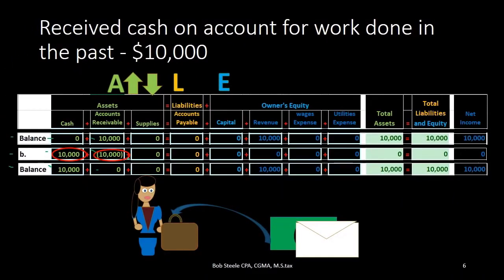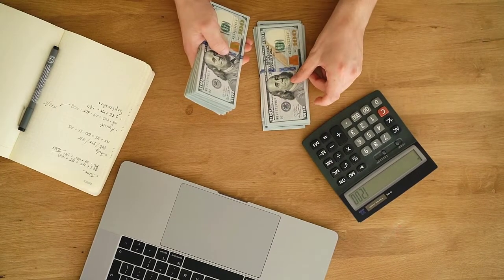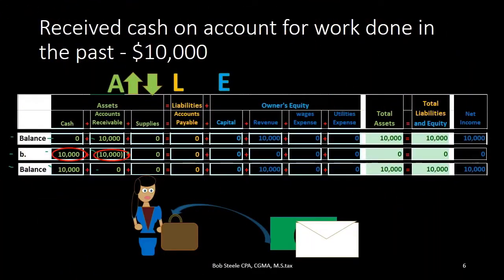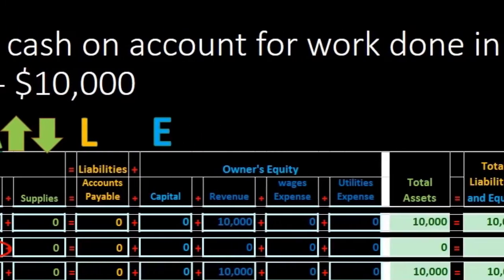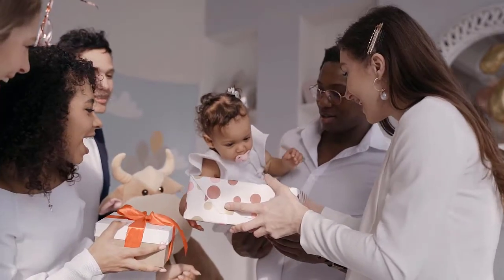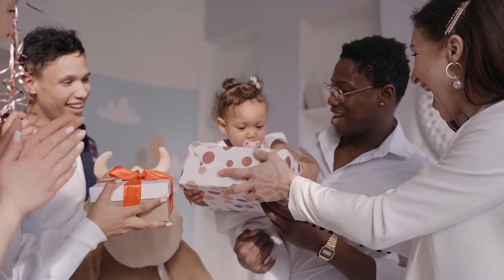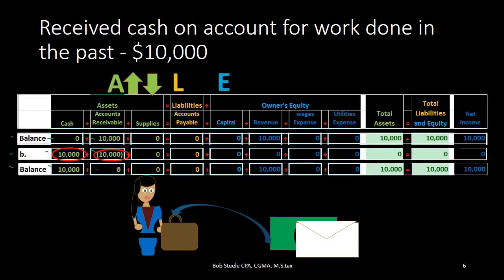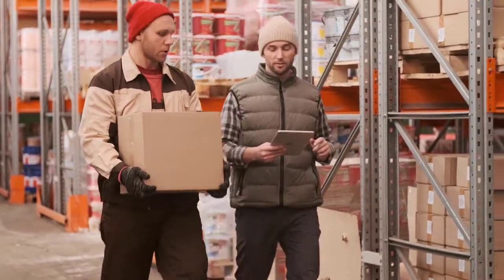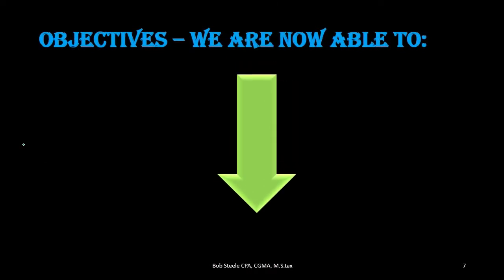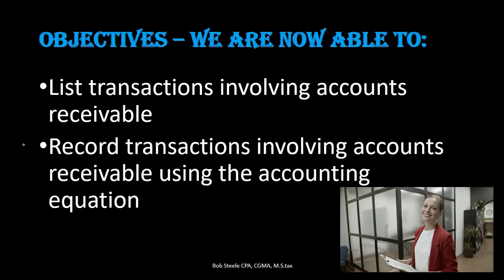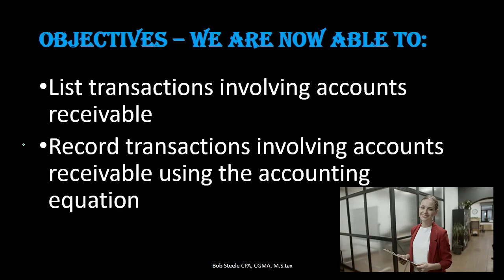This is the normal cycle for accounts receivable: receivable goes up when work is done, then receivable is paid and goes back down. There may be multiple receivables before payment arrives, but the cycle is always work done, receivable increases, payment received, receivable decreases. We are now able to list and record transactions involving accounts receivable using the accounting equation.